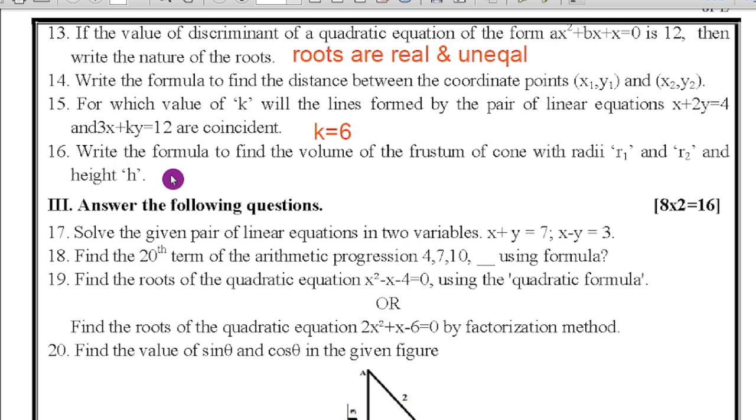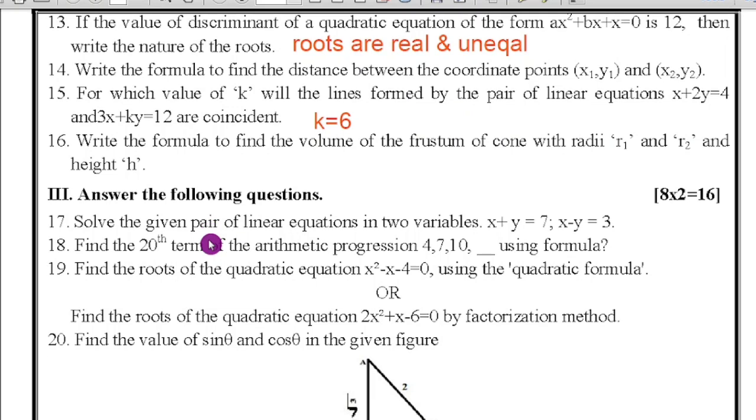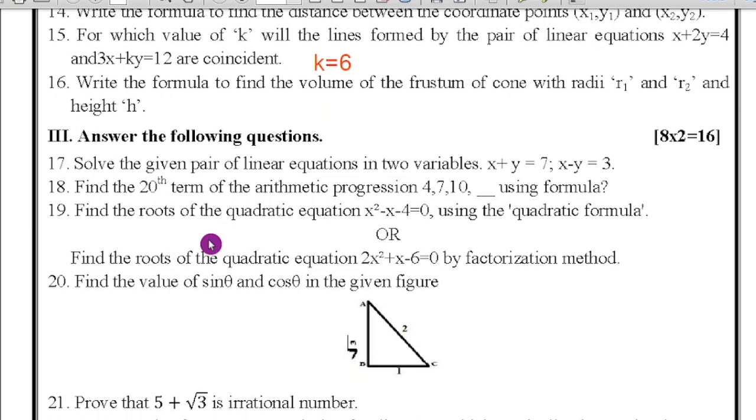Next, write the formula to find the volume of a frustum of a cone with radii r₁ and r₂ and height h. We have formula (1/3)πh(r₁² + r₂² + r₁r₂). So these questions carry one mark.